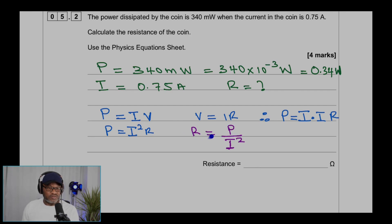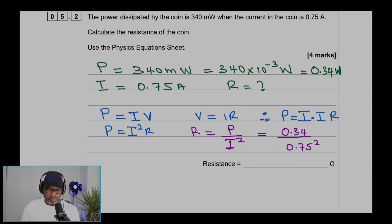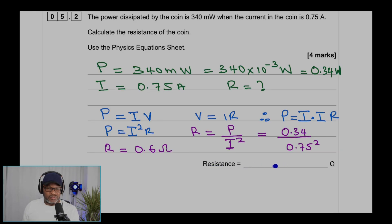Now we rearrange to make R the subject and populate the values for power and current. When we plug that into the calculator, we get the resistance to be 0.6 ohms. The unit required is ohms, so the answer is 0.6 ohms. Question 5.3.